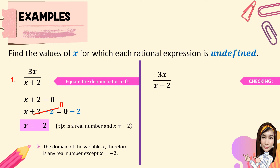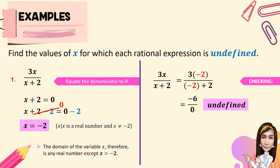To check: given 3x over x plus 2, we substitute x equals negative 2. We get 3 times negative 2 over negative 2 plus 2, which is negative 6 over 0. Negative 6 divided by 0 is undefined.